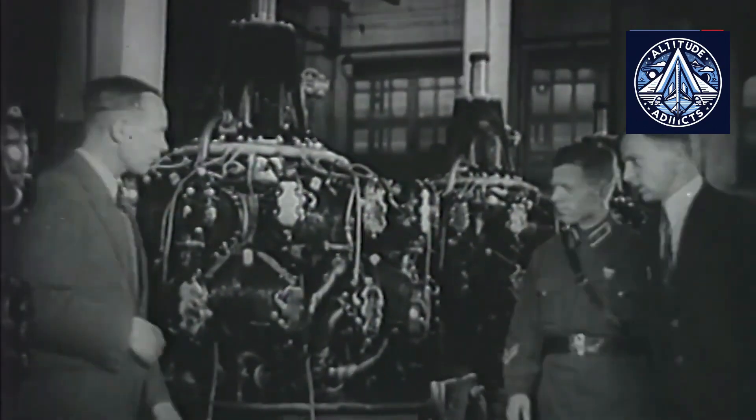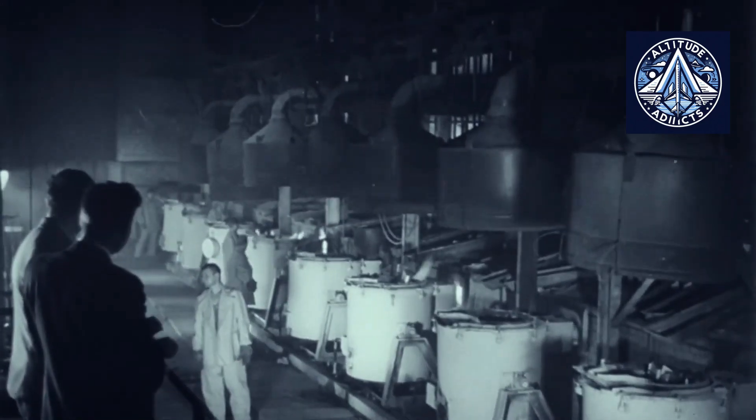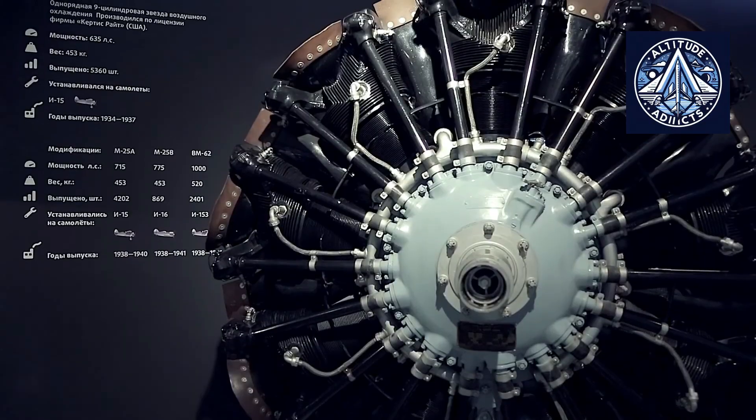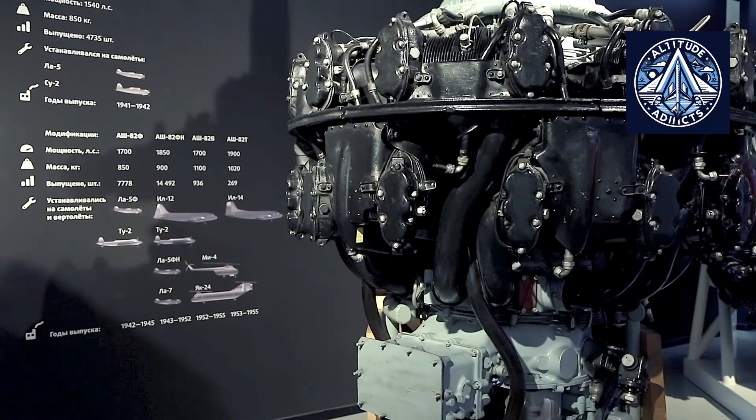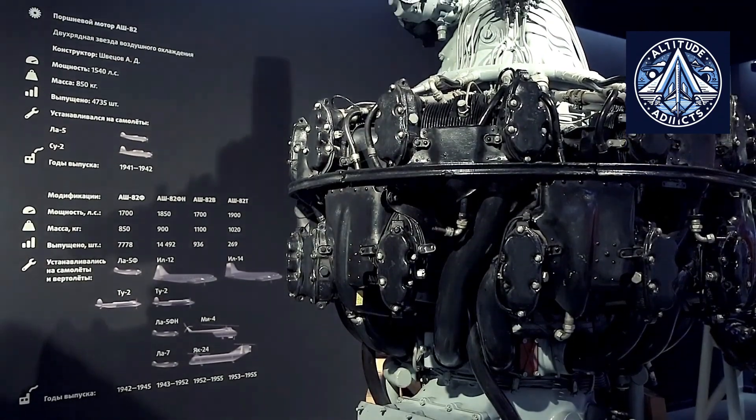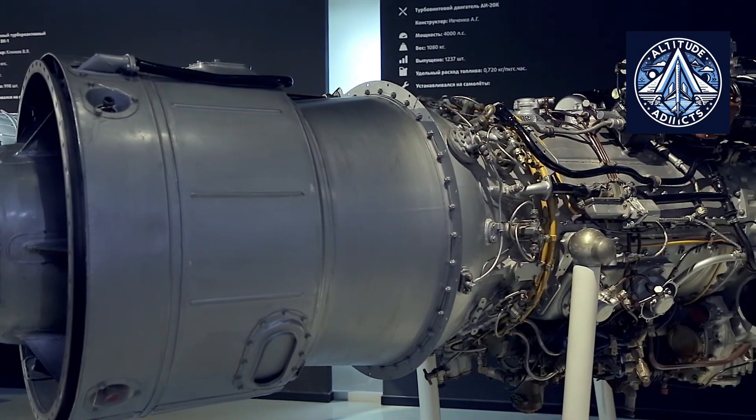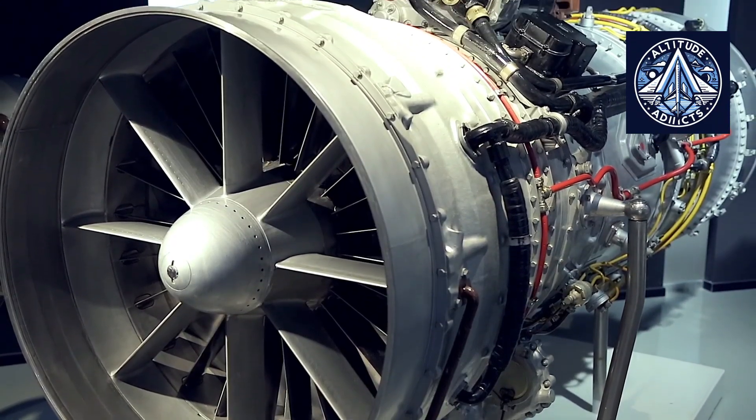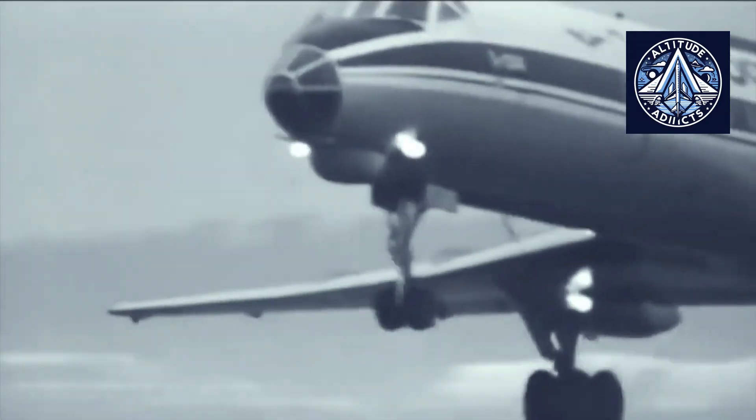The second generation, known for titanium, heat-resistant alloys, and improved compression, emerged during the 1960s. At this stage, the Soviet industry adopted titanium and advanced heat-resistant materials that significantly improved compressor and turbine durability. Engineers introduced two-stage compressors with separate low-pressure and high-pressure sections, raising pressure ratios to a range of 7 to 13. Turbine inlet temperatures also increased, reaching up to 1,250 Kelvin.